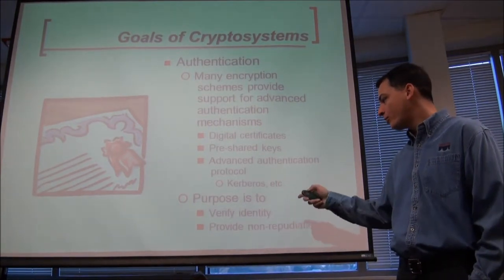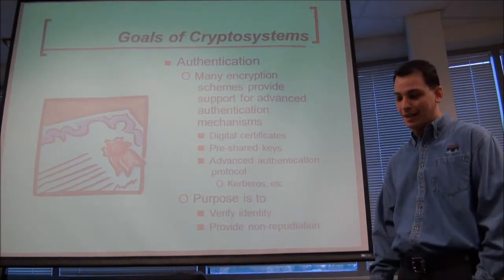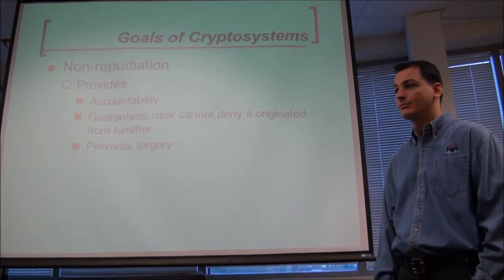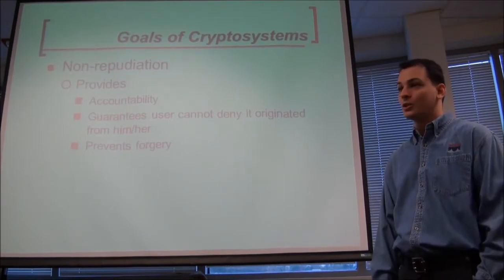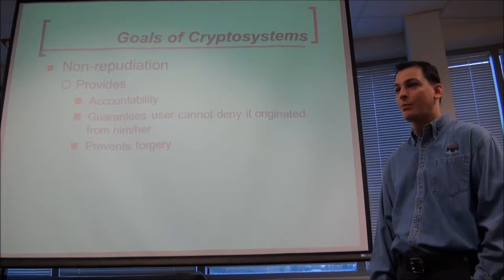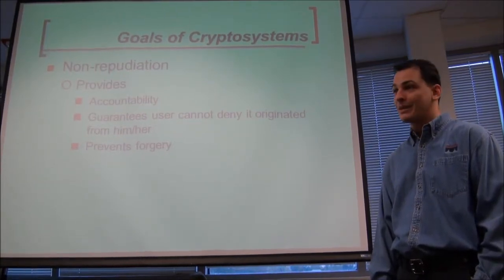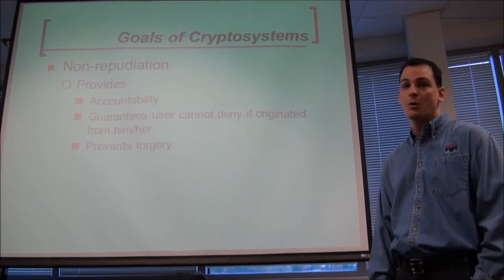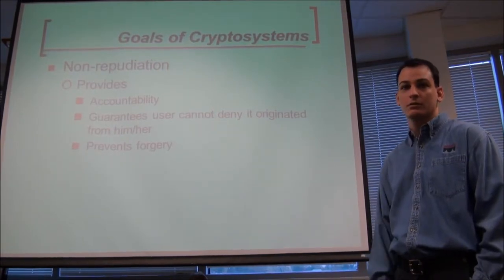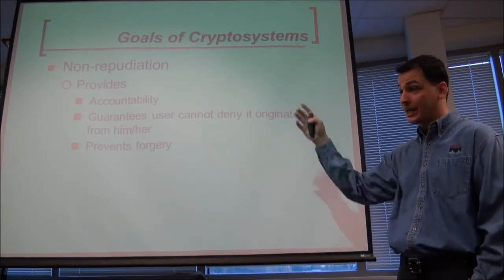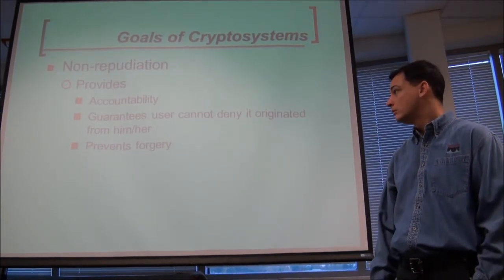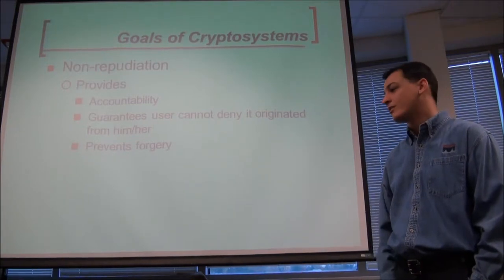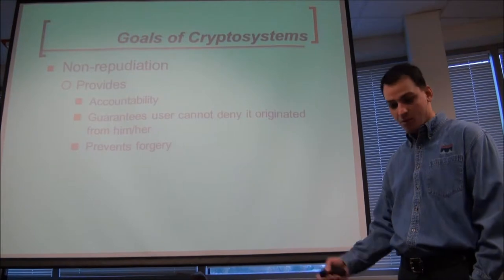The purpose here is to prove identity and tie non-repudiation to it, so you cannot deny actually doing something. Non-repudiation is a good way to provide accountability — tracking what people do, who they met with, how long they met, whether they showed up. You can prove it. Cryptographic non-repudiation guarantees that users cannot deny doing something and prevents forgery because you are the one that did it.